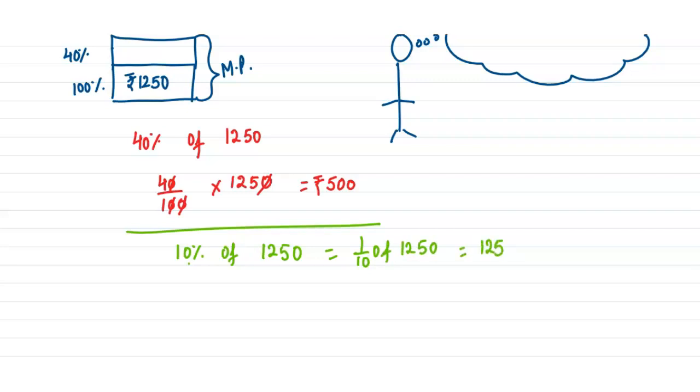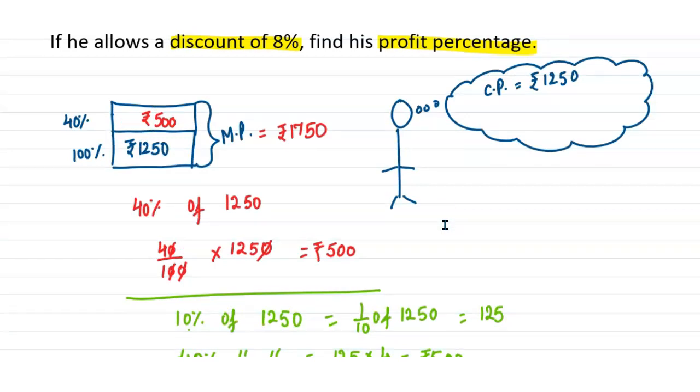Now you multiply this by 4, so 40% of 1250 will be 125 into 4, that would be equal to 500. So now we have to increase the price by Rs. 500, so the marked price will be equal to Rs. 1750. This is what the shopkeeper is going to show to the customer.